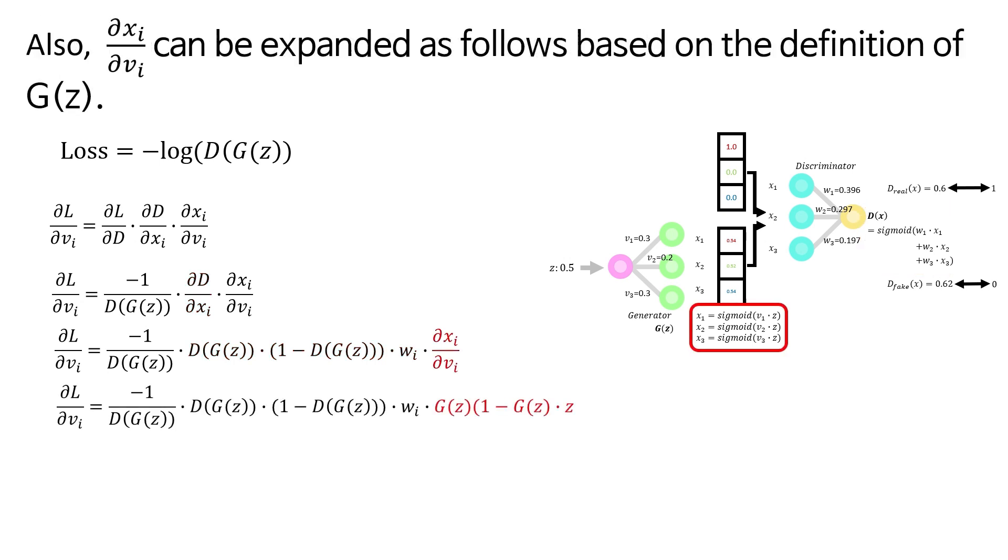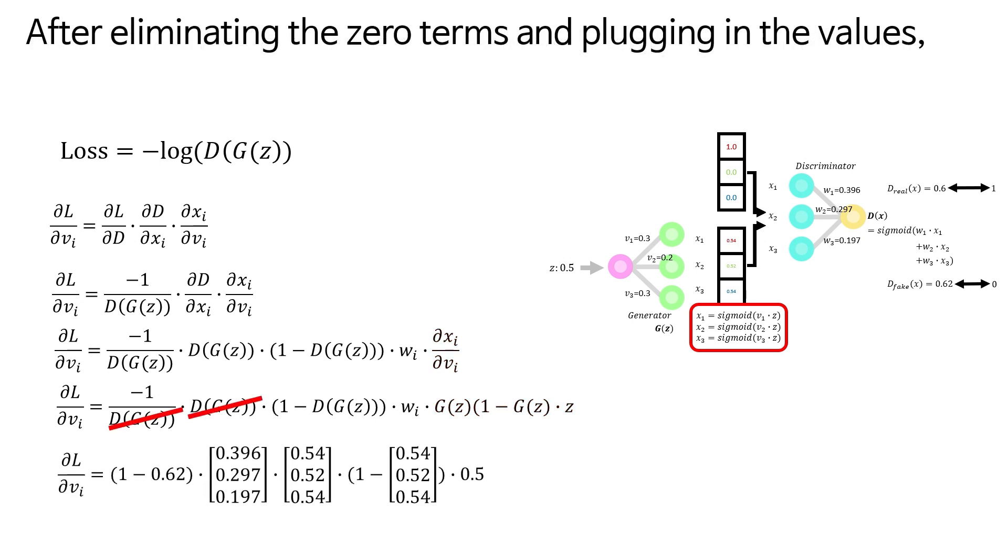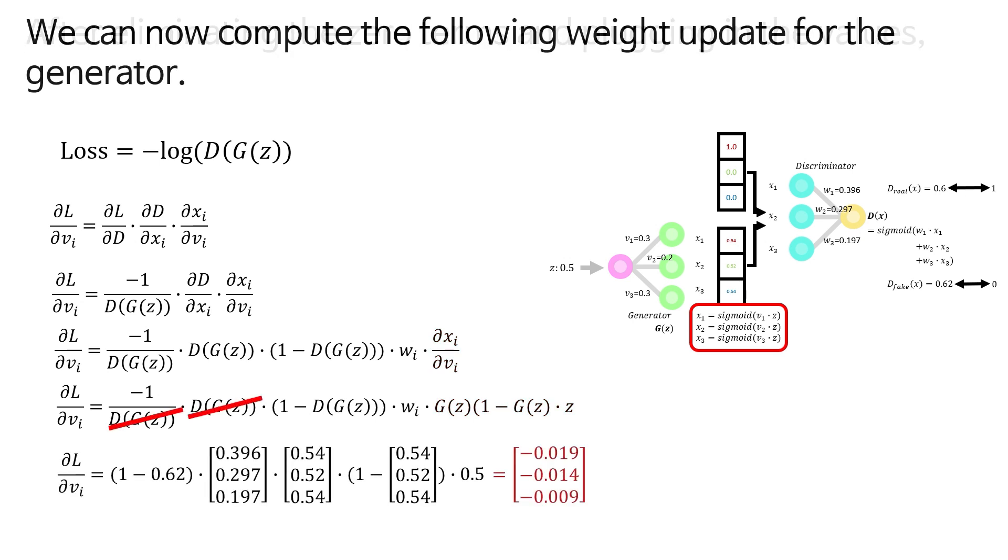Also, ∂x_i/∂v_i can be expanded as follows, based on the definition of G(z). After eliminating the zero terms and plugging in the values, we can now compute the following weight update for the generator.